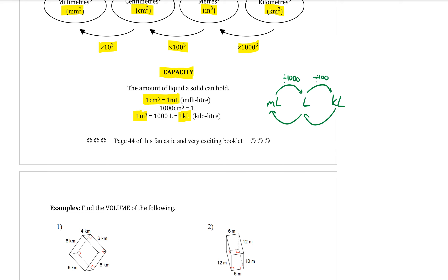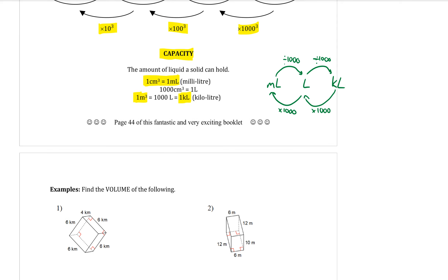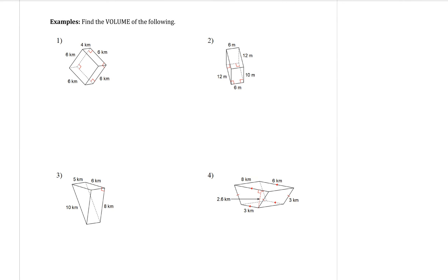Please make sure you add this diagram to your booklet. Alright, here we go with the examples. Example number one: find the volume of each of the following. This one is a rectangular prism, so you write down the rectangular prism formula V equals LBH, where L, B, and H are the three different dimensions — the length, the breadth, and the height.